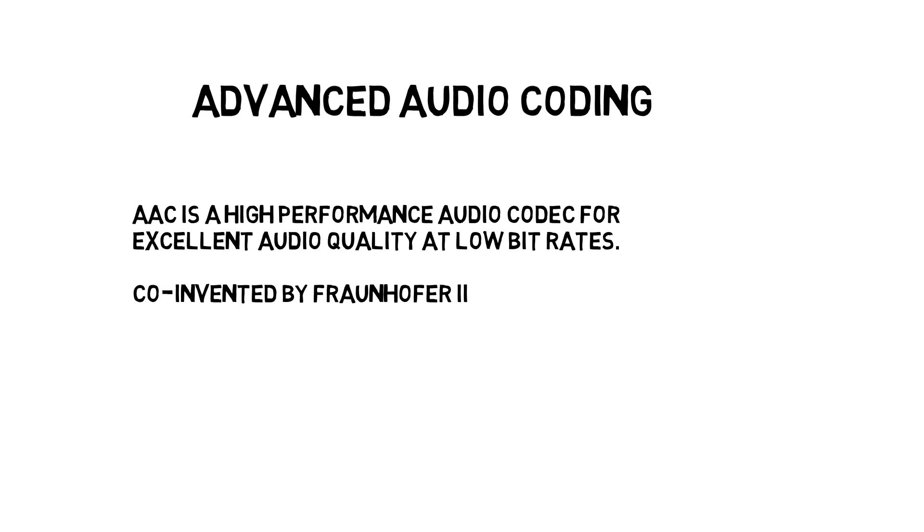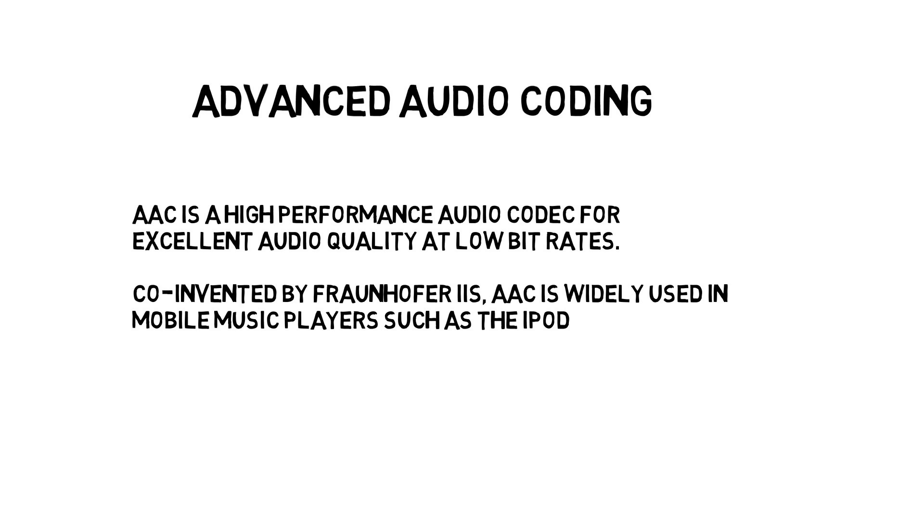So we're going to show two things here at the Fraunhofer booth. The first is what we call XHEAAC, which is an extended version of AAC. AAC began around the time the iPod was launched, turn of the century, and it's a very good codec in its original form as long as you have the bitrate to carry the AAC signal. Typical bitrate is perhaps 128 kilobits per second for a stereo channel.